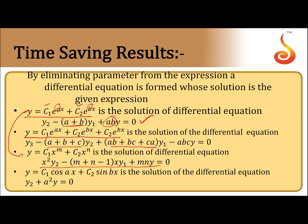In complex/harmonic form, when y = c₁cos(ax) + c₂sin(bx), it is the solution of the differential equation y₂ + a²y = 0.